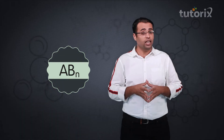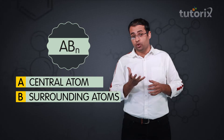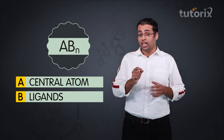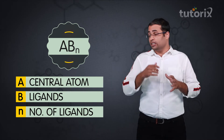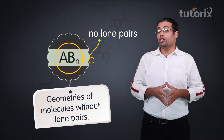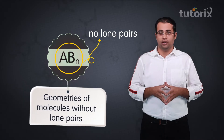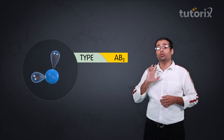Now, after understanding VSEPR theory, let us use it to predict the shapes or geometries of molecules of the type ABM, where A is the central atom, B is the surrounding atoms called ligands, and M is the number of ligands. ABM does not contain any lone pairs. So we will be discussing geometries of molecules without lone pairs. Let us start with a molecule that has two bond pairs and the formula AB2.